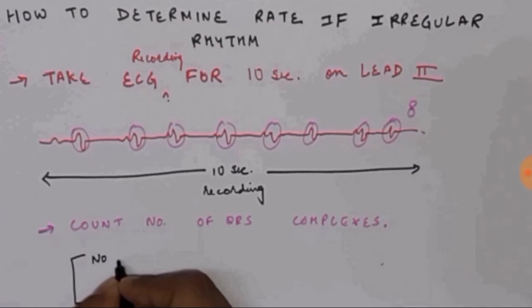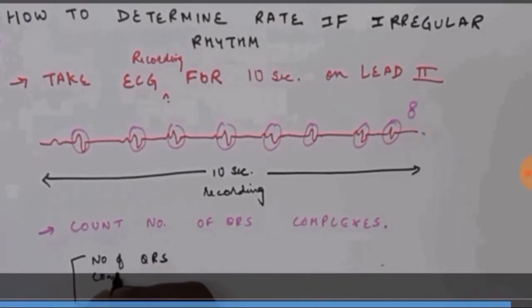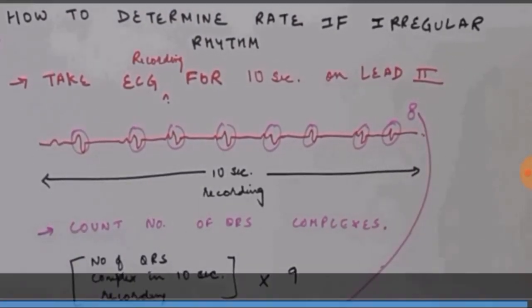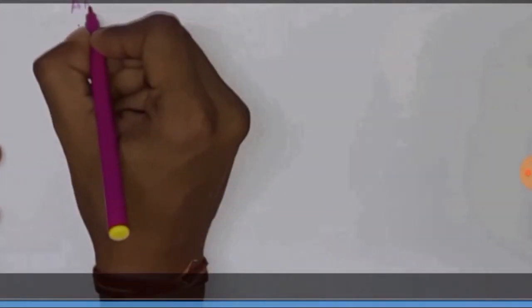Our formula for determining the heart rate is number of QRS complexes for a 10 second recording multiplied by 6. So, it is 8 multiplied by 6. I have not shown this in the video, but the heart rate will be 8 multiplied by 6 times, which is constant, and that gives us beats per minute.